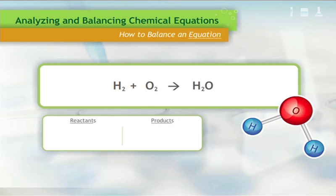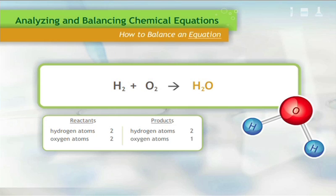On the left side, there are two hydrogen atoms and two oxygen atoms. On the right side, there are two hydrogen atoms and only one oxygen atom. Remember, for an equation to be balanced, it must have equal numbers of each type of atom on the left and the right side.